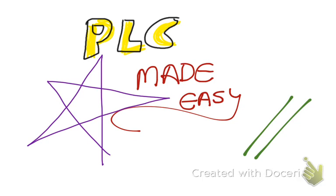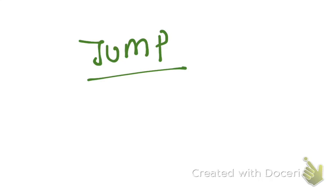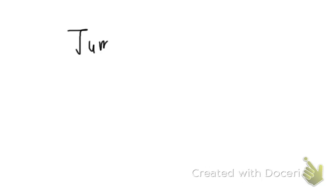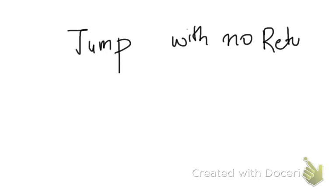Hello guys, hope you have been having a very lovely day. In this video we will be learning about the jump function. Jump is actually a function that is used to skip a specific part in a program. A jump function is essentially of two types: the first is the jump with no return, and the second is a jump with a return.